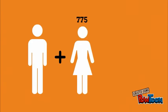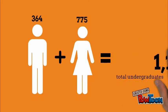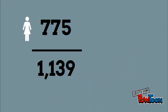775 plus 364 equals 1139. So 775, the number of females, divided by 1139, the total number of students, equals 0.68.